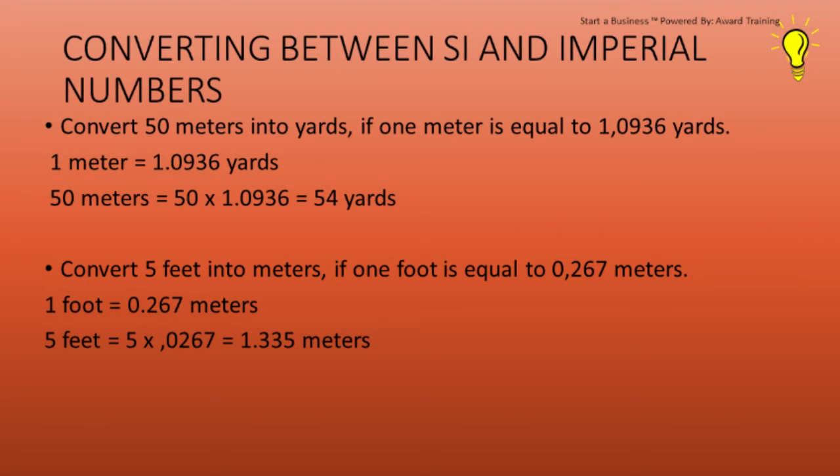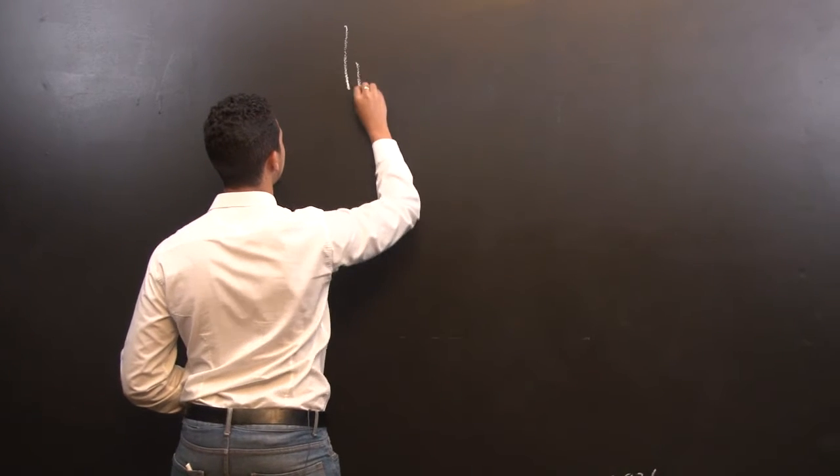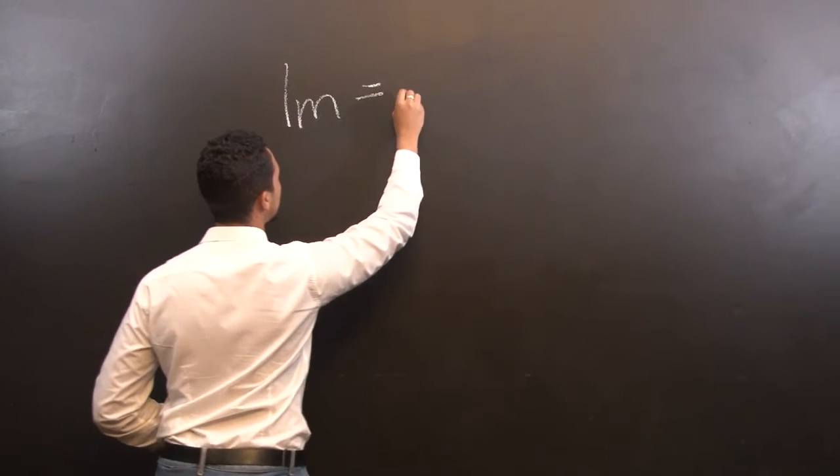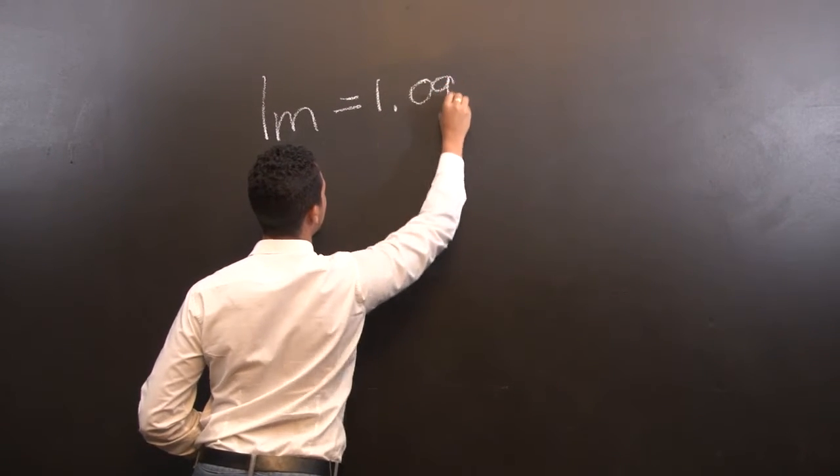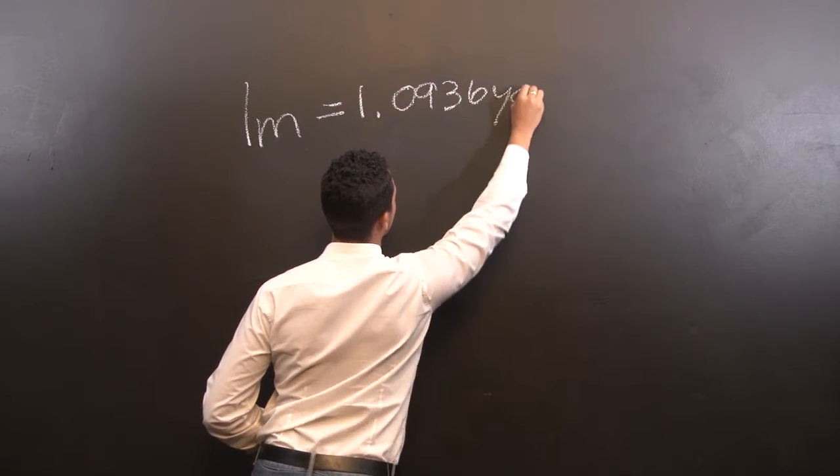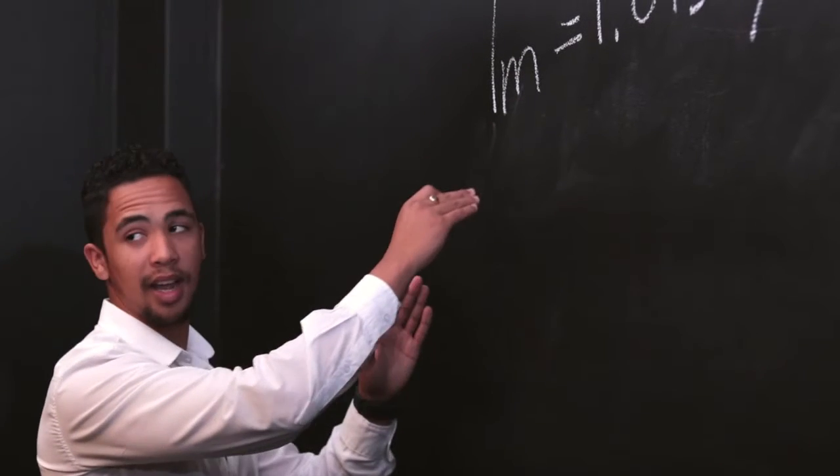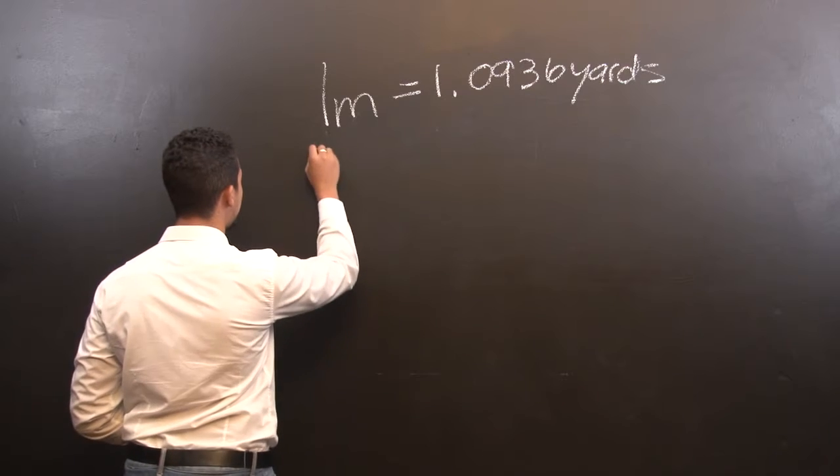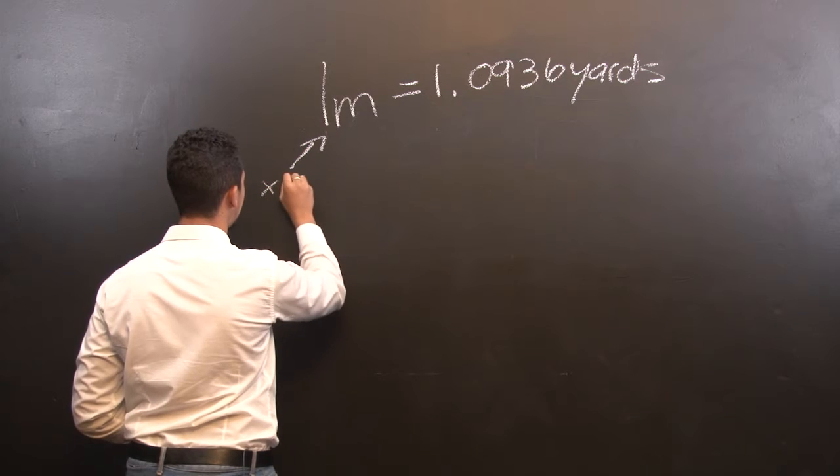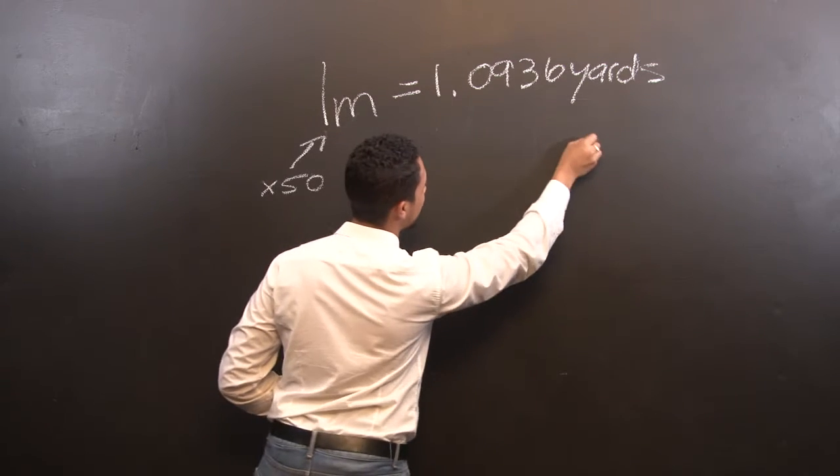Let's take a look at two examples of how to convert between SI and the imperial system. Our first example is convert 50 meters into yards if one meter is equal to 1.0936 yards. Remember, one meter is equivalent to 1.0936 yards. So the rule of math is what we do on the one side, we do on the other side. So if I times this by 50, surely I will times the other by 50.